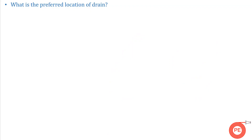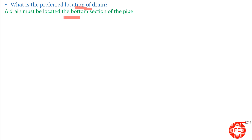Our first question is: what is the preferred location of a drain? While designing a piping system, drains and vents both play an important role. The drain should be located at the bottom section of the pipe, and similarly the vent should be located at the topmost part.